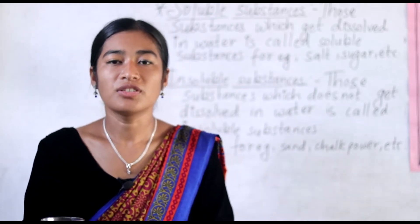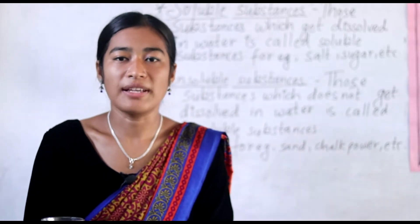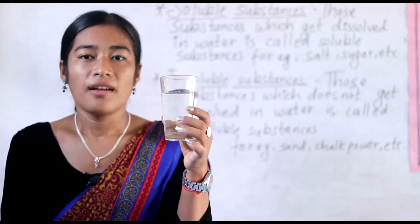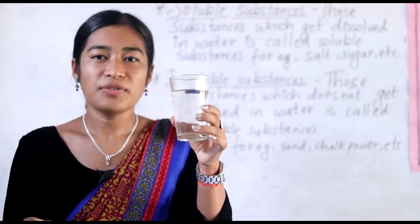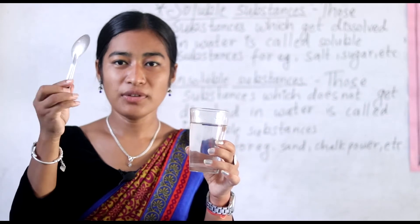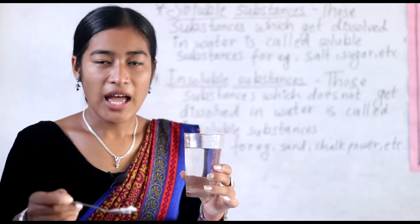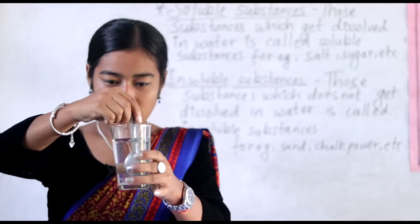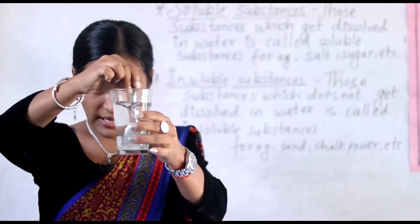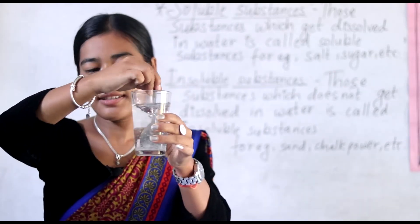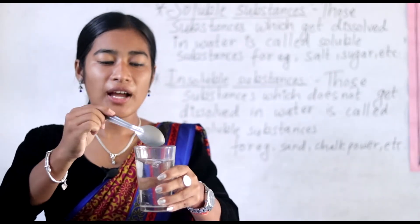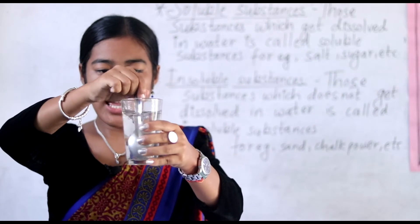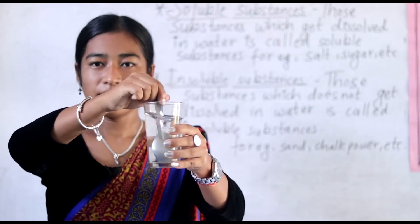Before we go to the topic, I want to give some examples and we will do it practically. I have a glass of water, and this is a spoon. I will take one tablespoon of sugar and I will put it inside the water. I will stir it with the spoon. What will happen to the sugar?